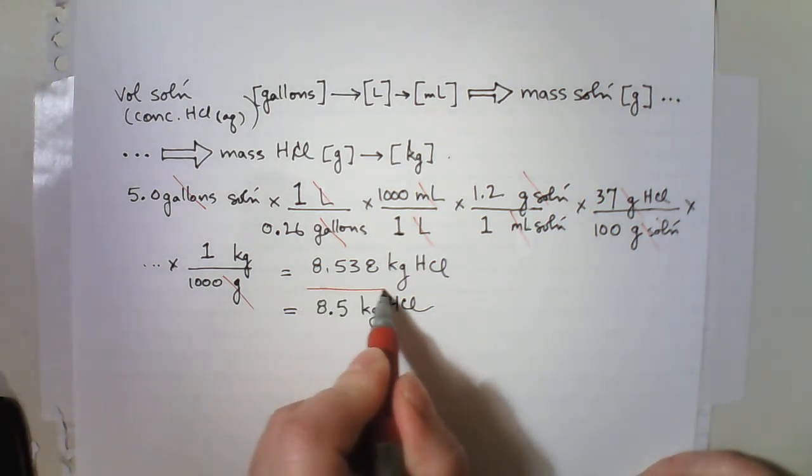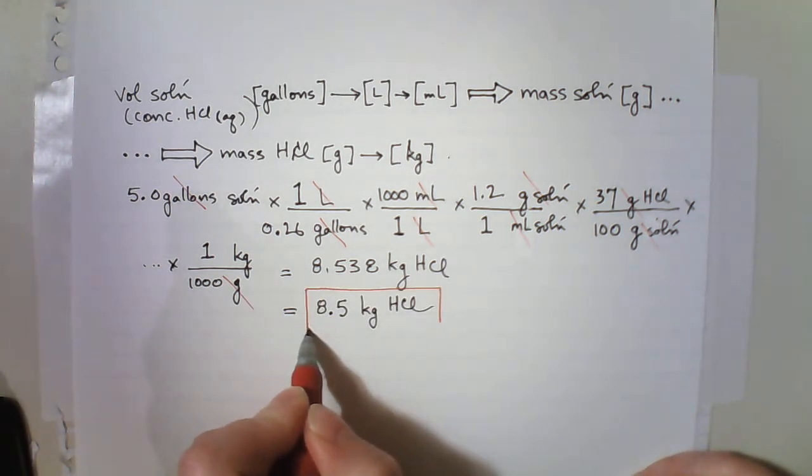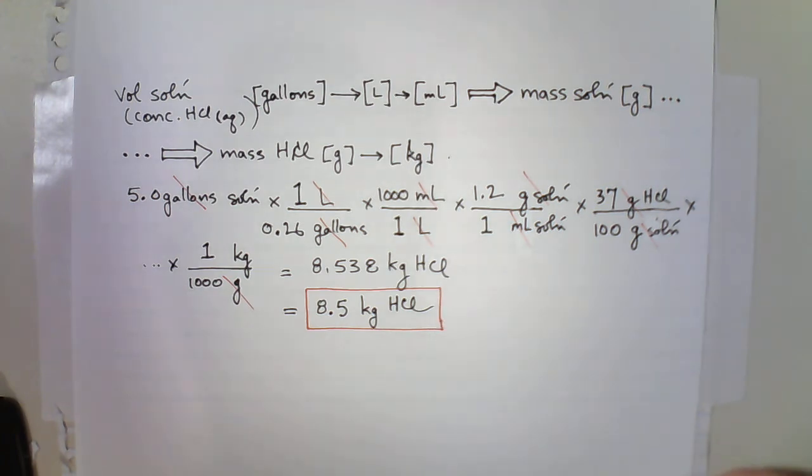So there are 8.5 kilograms of HCl in 5 gallons of concentrated hydrochloric acid.